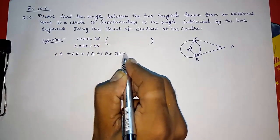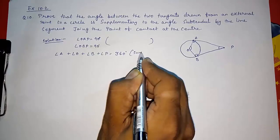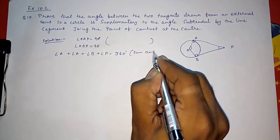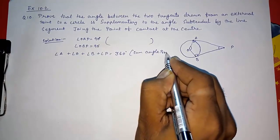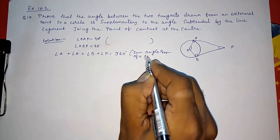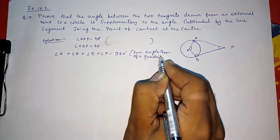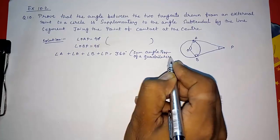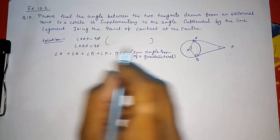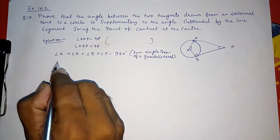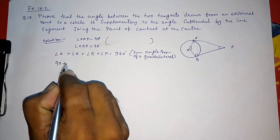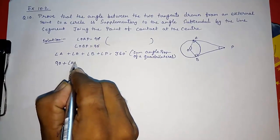Sum angle property of a quadrilateral. Now we know here A and B are 90 degrees, so instead of this 90 plus, instead of O I am writing angle AOB...